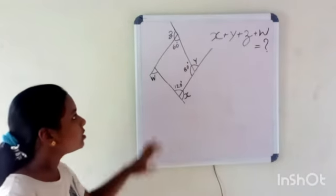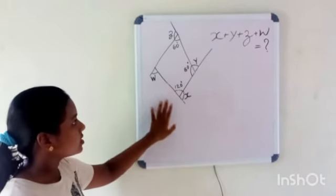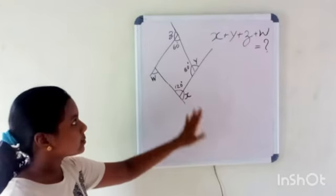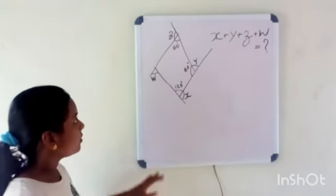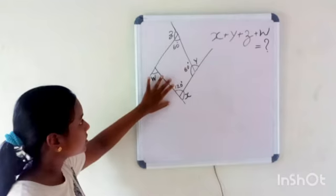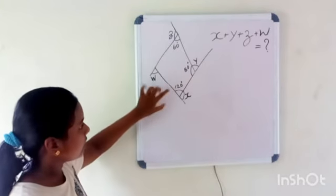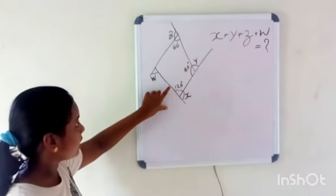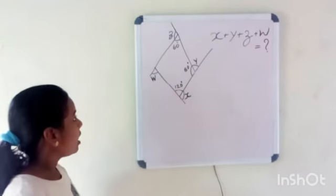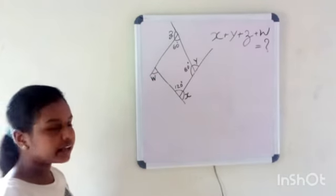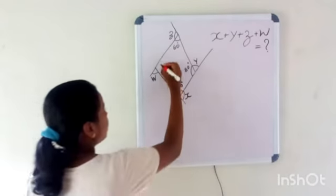Our question is based on a quadrilateral and we have to find the sum of x plus y plus z plus w. We are given some angle measures: 60 degrees, 80 degrees, and 120 degrees. One angle is missing in our question, and first we have to find that angle measure — let's consider it as angle P.